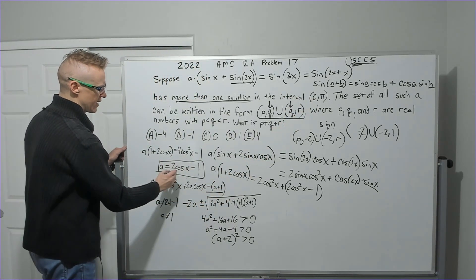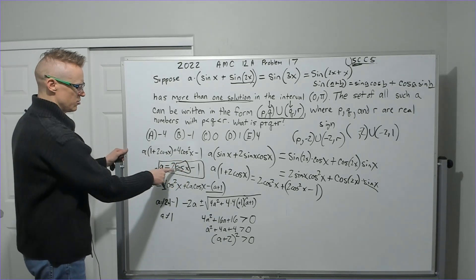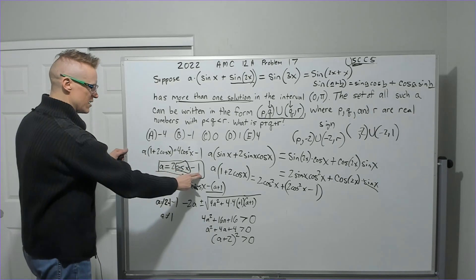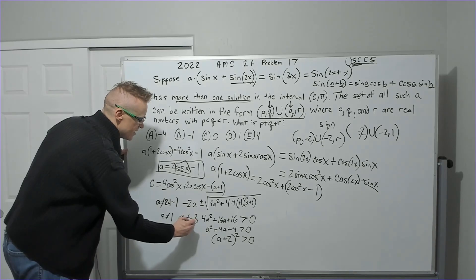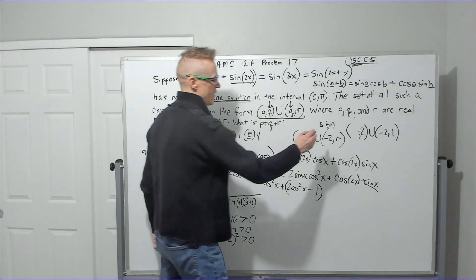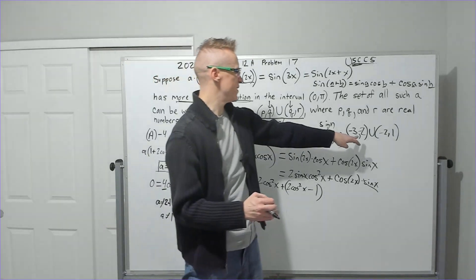It would be for cosine. That would mean that this is negative 1. So 2 times negative 1 is negative 2 minus 1. We're also going to find a cannot equal negative 3, and that must be the other value. Let's go ahead and add this up.